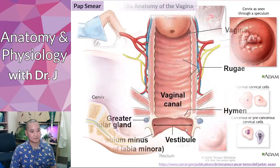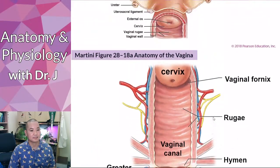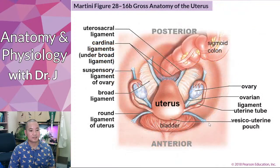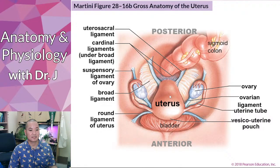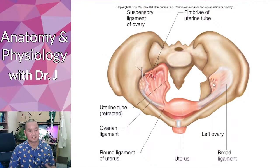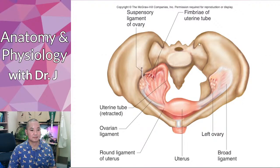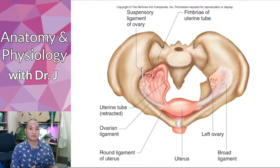Now at the uterus: it is held in place by multiple ligaments that also support the ovaries. The uterus is firmly anchored, not free-floating.